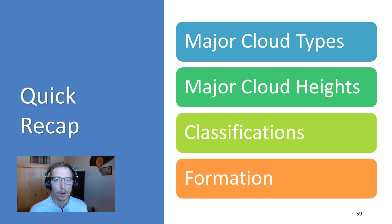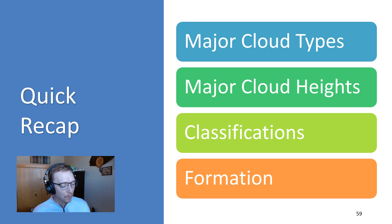I know it was a bit lengthier than I typically like to go, but there's a lot to talk about with all these different clouds. So those are our major cloud types, heights, classifications, formations, and other information. In the last one for this little group, we'll be talking about precipitation. I hope you enjoyed the video and are looking out at the clouds right now — unfortunately it's a very blue sky day when I'm recording this. Have a great day, and we'll see you in the next video.